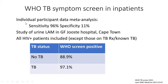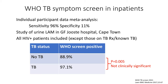We conducted for the WHO a new individual participant data meta-analysis — like a regular meta-analysis, but using raw data from original studies for greater accuracy. The sensitivity of the WHO symptom screen is brilliant at 96%, but specificity is awful at 11%. In Steve Lawn's study at a secondary hospital in Cape Town, among unselected HIV-positive inpatients, the WHO symptom screen was positive in about 90% without TB and 97% with TB. That's statistically significant, but as a clinician, moving from 90% to 97% is not very helpful.